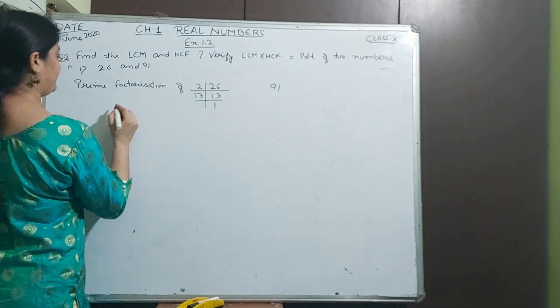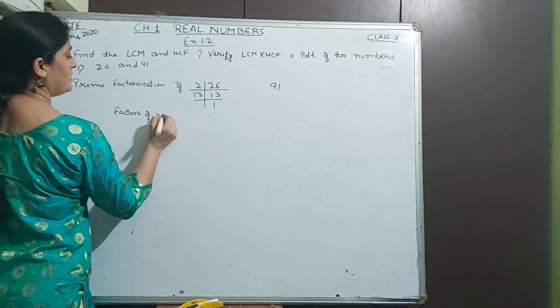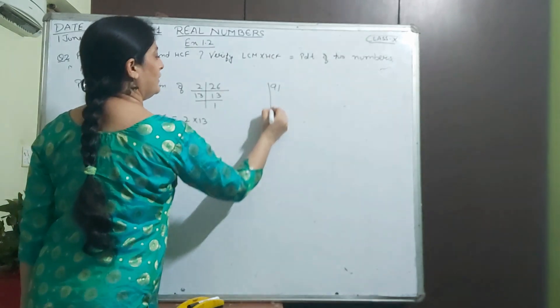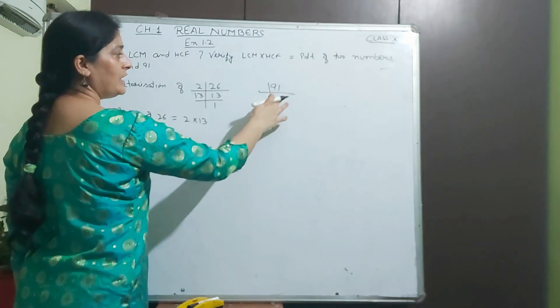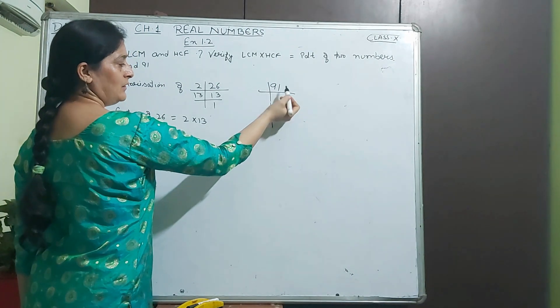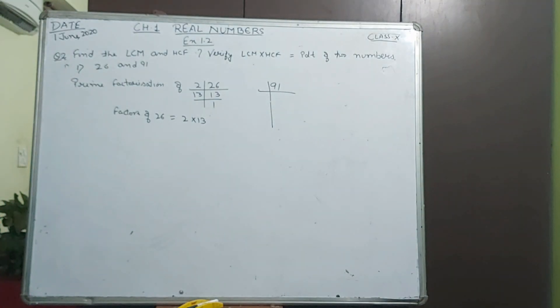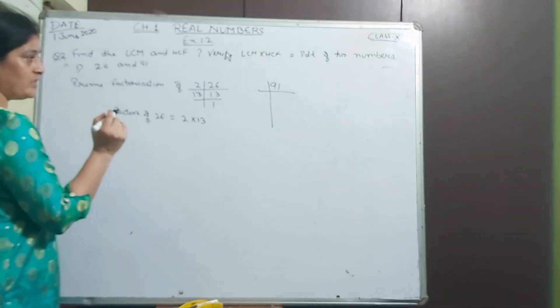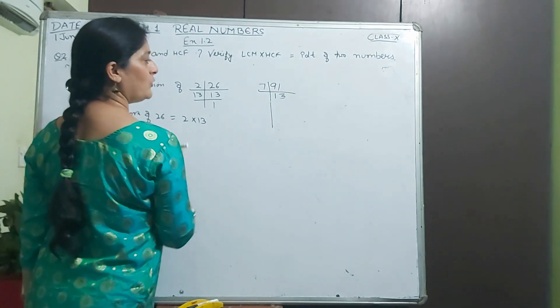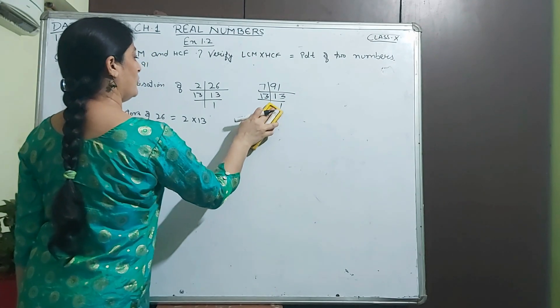26 and 91 are the two numbers. We have to find the LCM and HCF. For this we do prime factorization. Prime factorization of 26: 2 times 1 is 2, 2 times 3 is 6. 13 is a prime number, it goes with itself. Factors of 26 are 2 into 13.